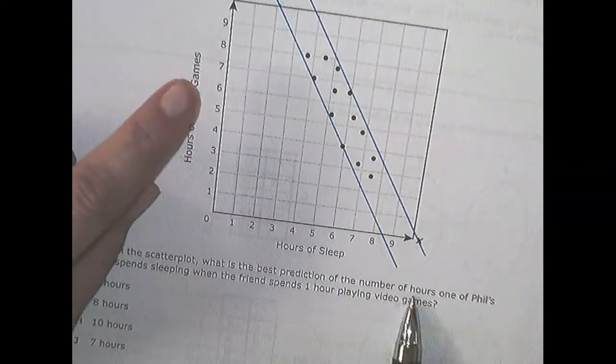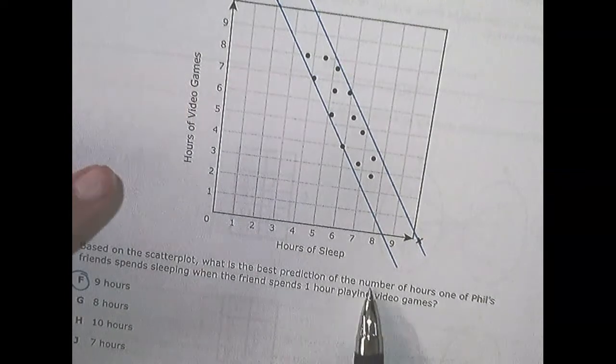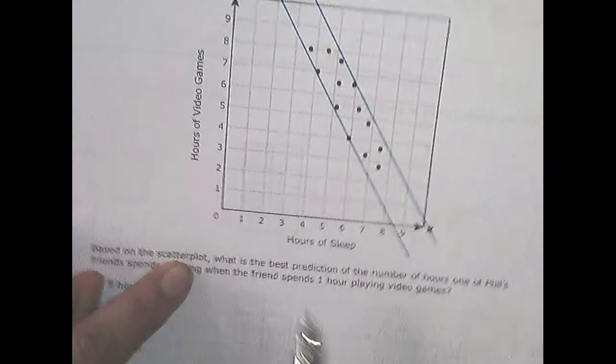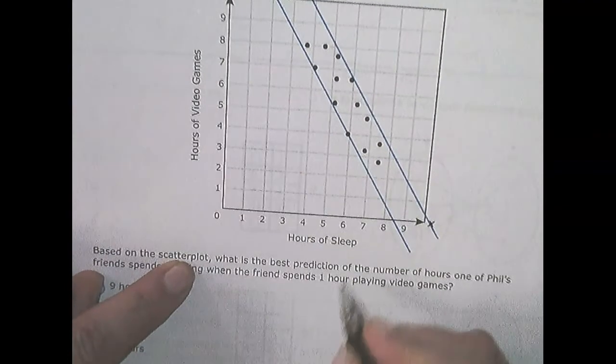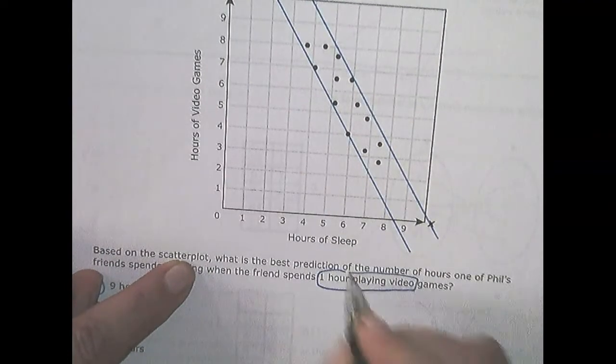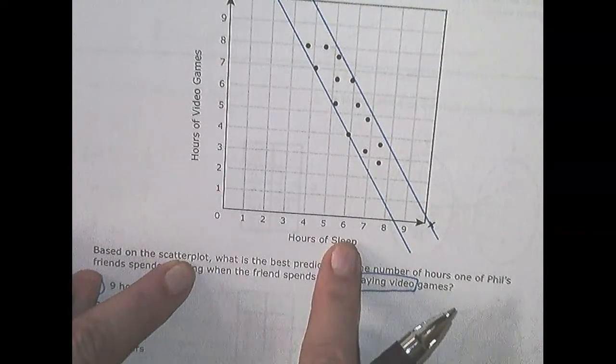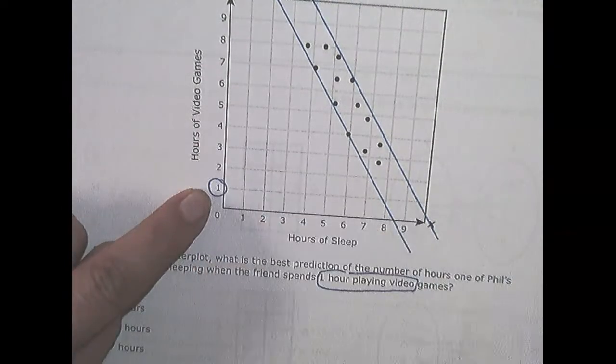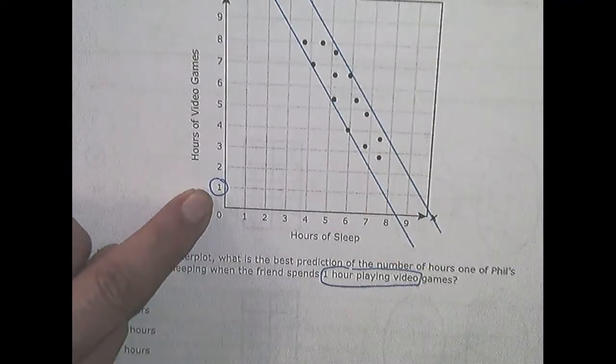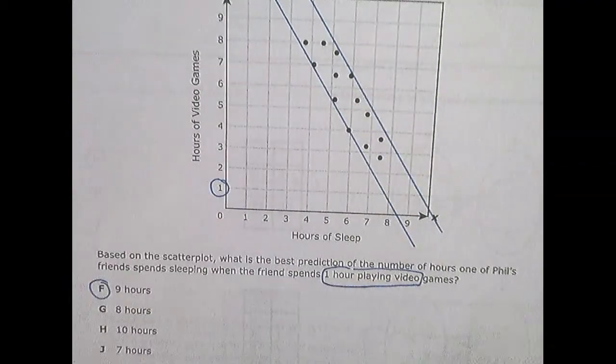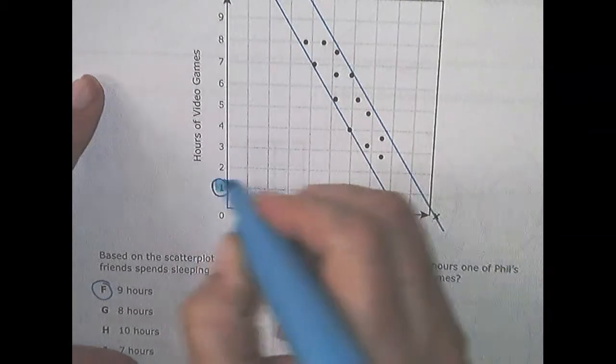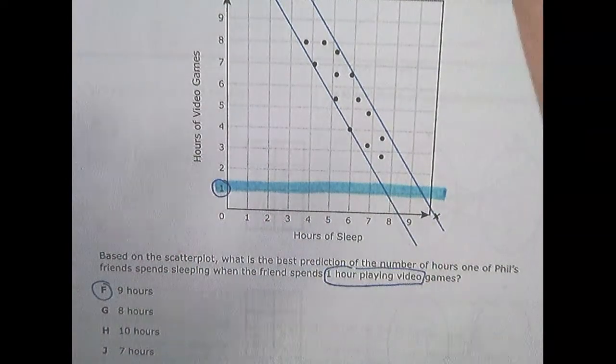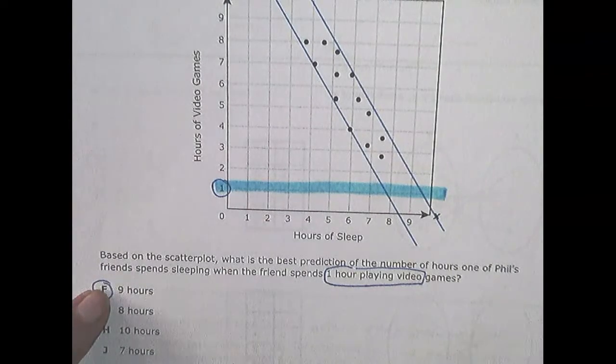So based on the scatter plot, what is the best prediction of the number of hours? By the way, that's sleeping. This is hours. Hours that one of his friends spends sleeping when the friend spends one hour playing. Go find one hour playing video games. That's one hour sleeping. That's one hour playing video games. So I'm looking for that piece right there. So if that's true, I'm going to use my fancy highlighter. I'm looking right there.